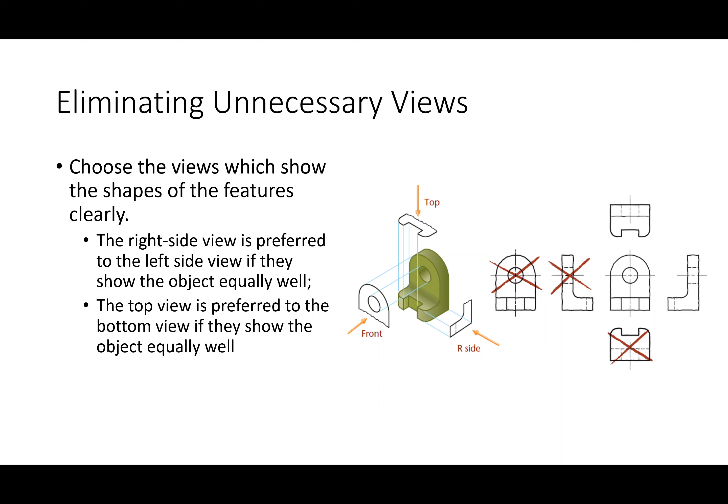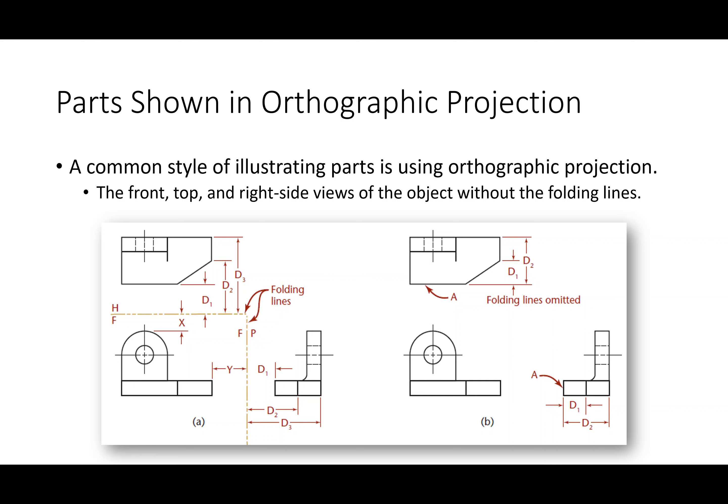A standard set of views in engineering drawing is an orthographic set: front, top, and right view. Using the glass box approach, you draw what you'd see unfolding from front to top and front to right — you don't actually put the folding lines in the final schematic. You want to reduce the amount of potential error as much as possible.